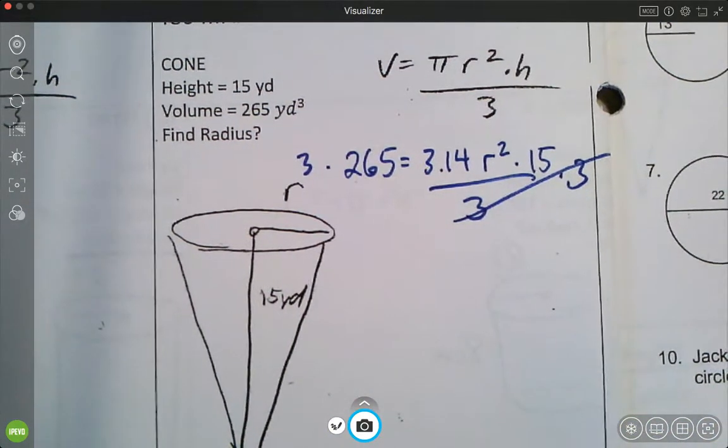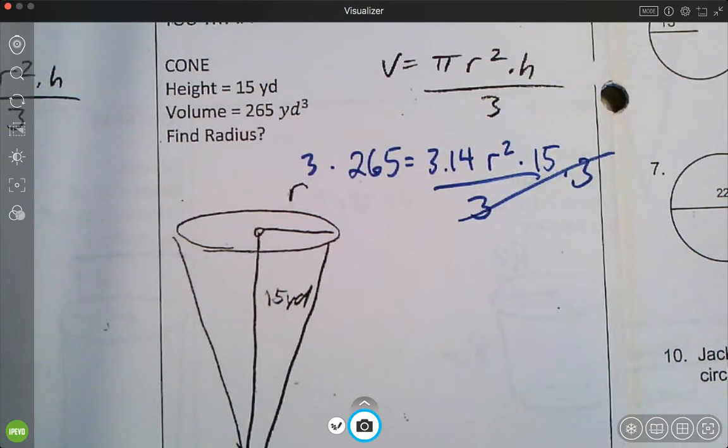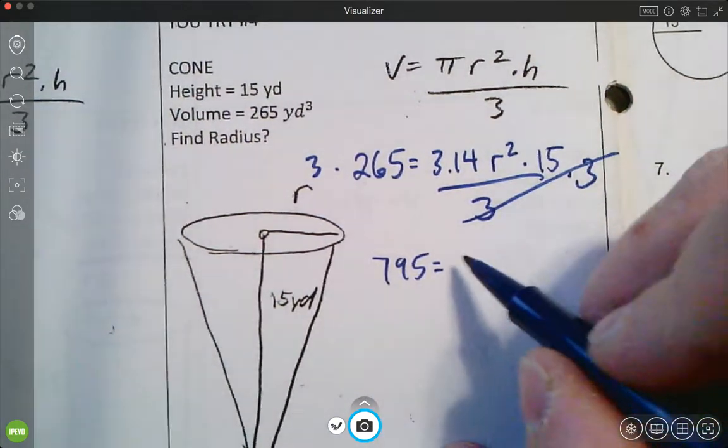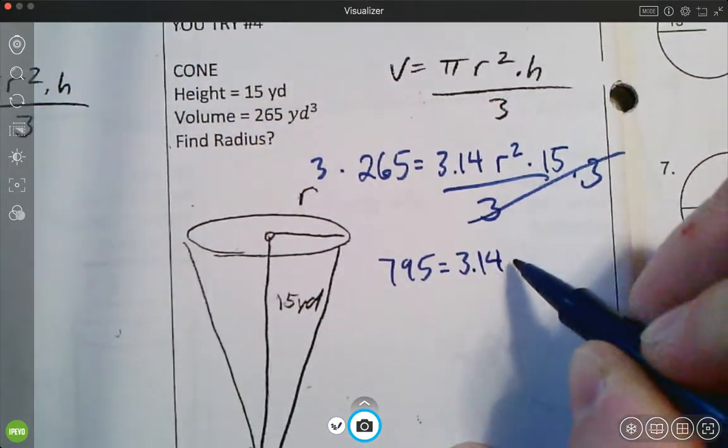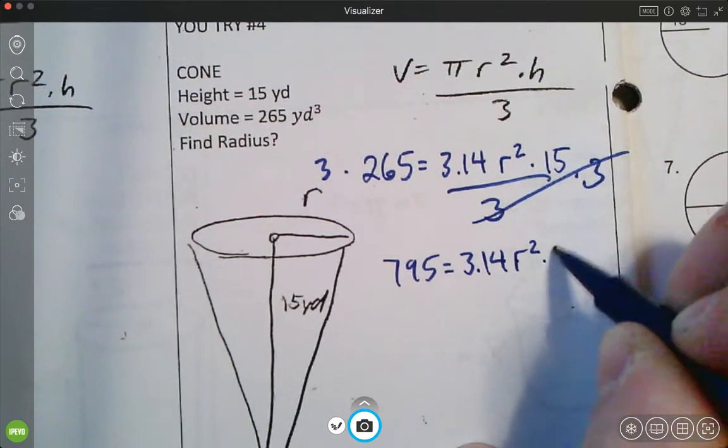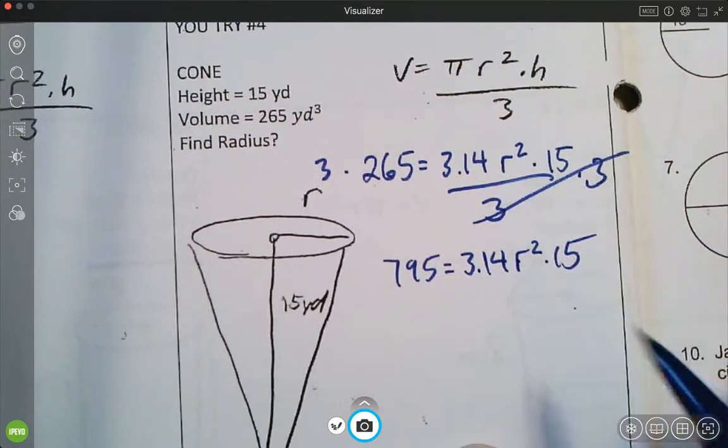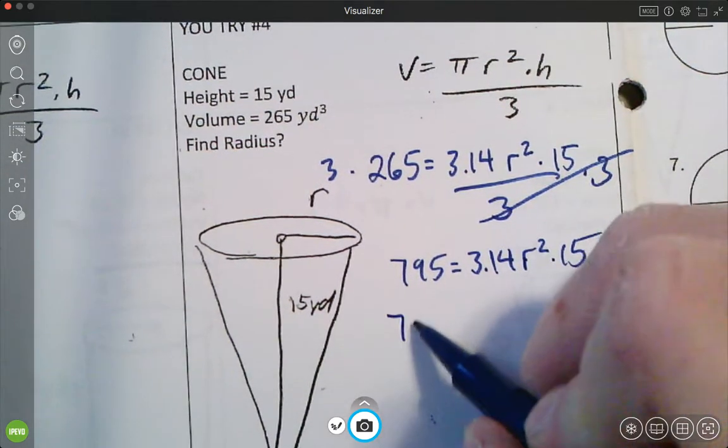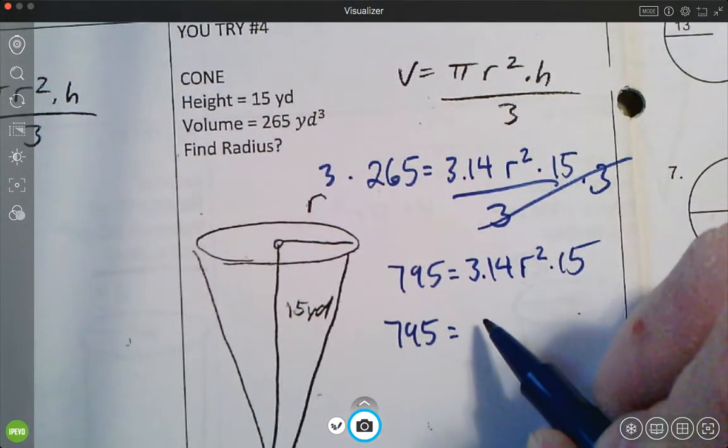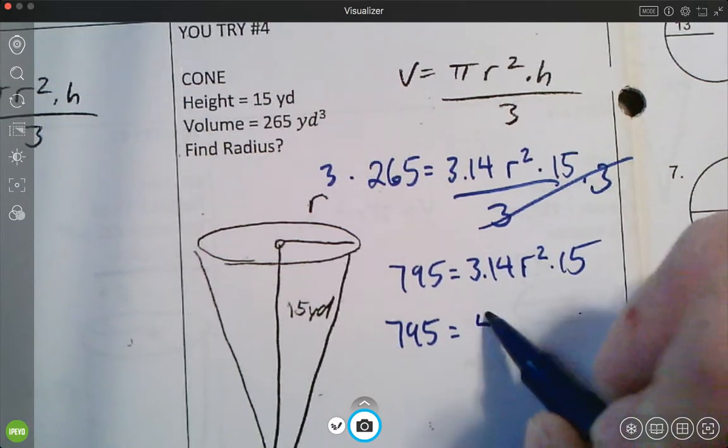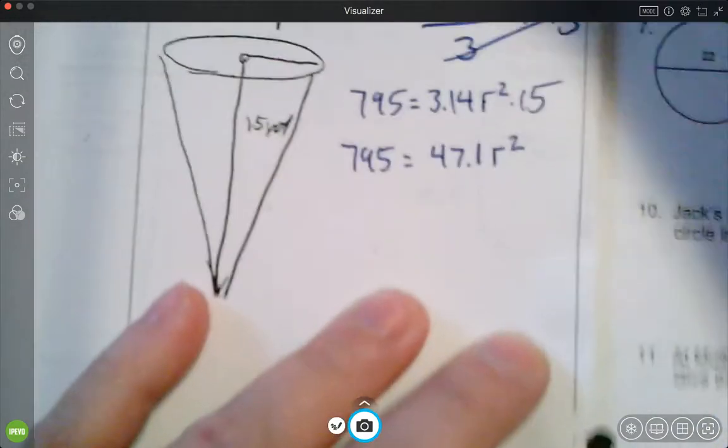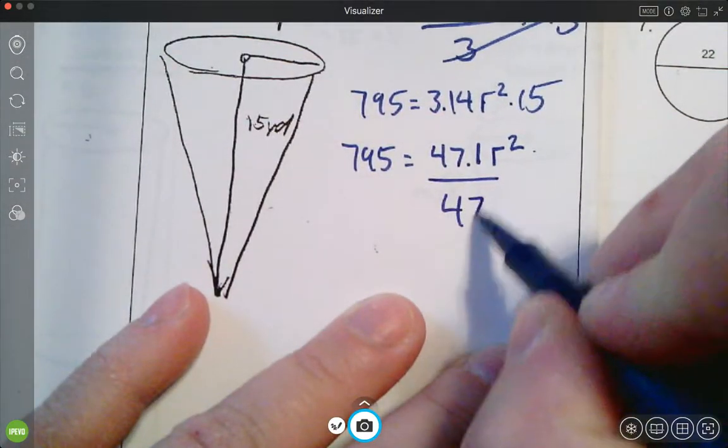I'm left with 265 multiplied by 3, is 795. Then I'm left with 3.14, radius squared, times 15. I can multiply 3.14, times 15. And I get 795 equals 47.1 radius squared. So hopefully at this point, you divide each side by 47.1.